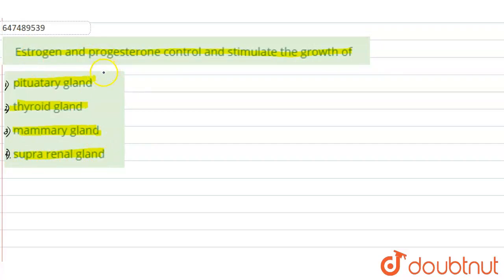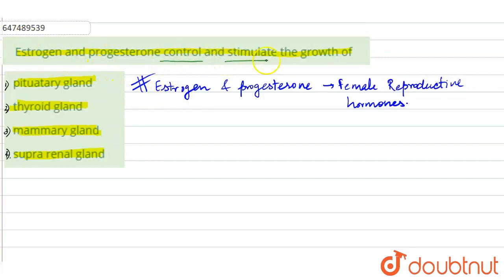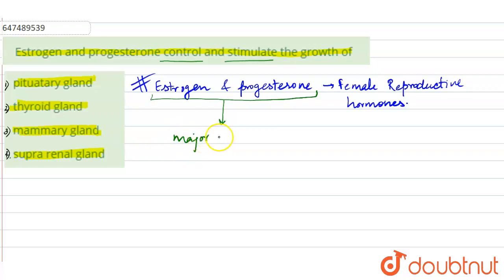I am going to explain here that estrogen and progesterone are both hormones. First of all, I will tell you that estrogen and progesterone are both female reproductive hormones. We will see what role they actually play — they have a very important role in breast cancer.